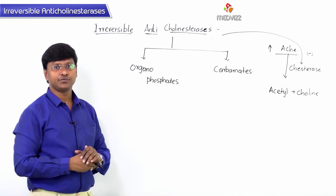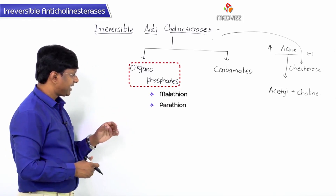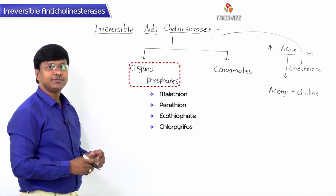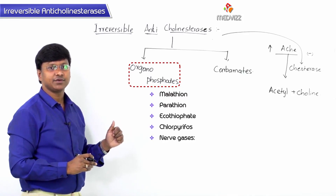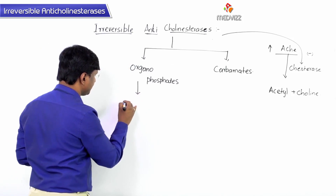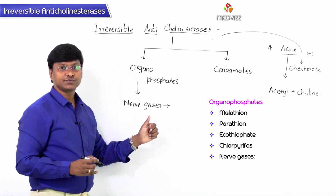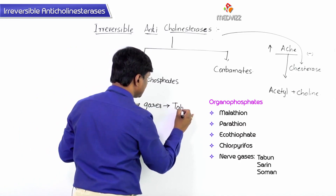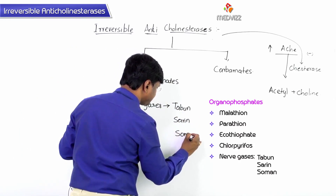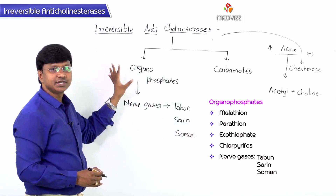The organophosphate group includes malathion, parathion, ecothiophate, and chlorpyrifos. Apart from these, we have certain nerve gases which are also organophosphorous compounds. The examples of nerve gases include tabun, sarin, and soman.